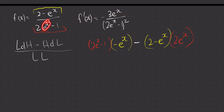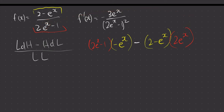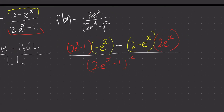The derivative of negative 1 is 0, so there's nothing extra there. Then the bottom is low squared — just (2e to the power of x minus 1) squared.